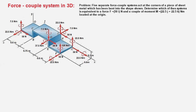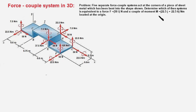Hello friends. In this video I'm going to solve a problem on the 3D force couple system. If you have watched my previous video on this topic, you will find this problem super easy. There are five different force couple systems acting at different points of this body, and we have to find which of these is equivalent to the force couple system of 15 Newton's force and this moment acting at point O.